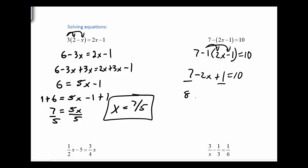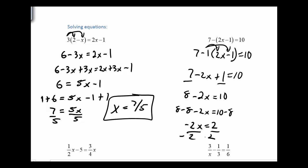7 and 1 give me 8, so we have 8 minus 2x equals 10. I'm thinking it makes sense to subtract 8 off both sides, which gives me negative 2x equals 2. Then I divide by negative 2, and 2 divided by negative 2 is negative 1.